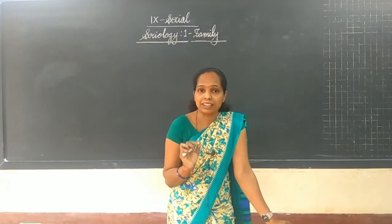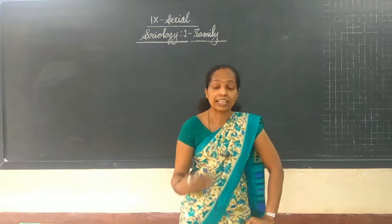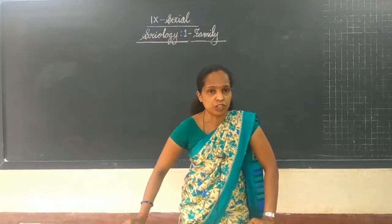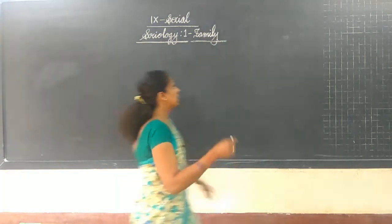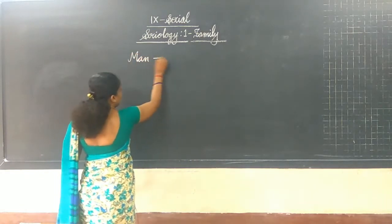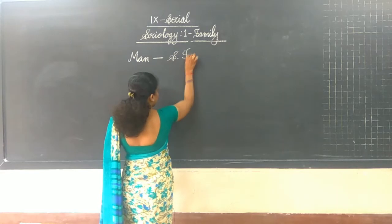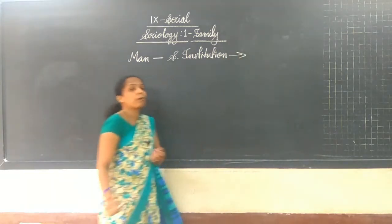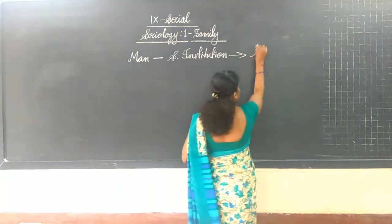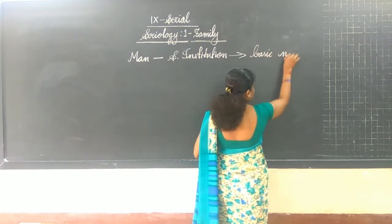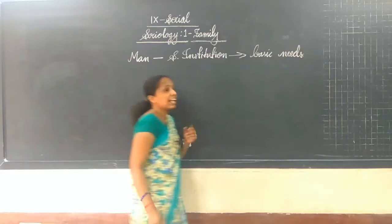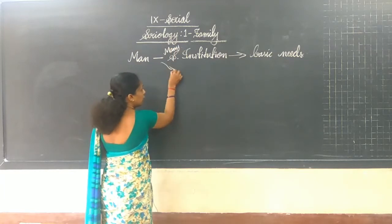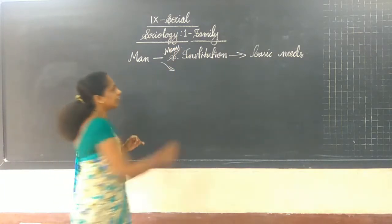Man has founded many social institutions — like a hospital, a family, a police station, or a school. There are many other institutions we can see in a society. Among those many social institutions, one of the most important is the family.